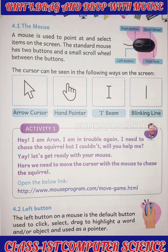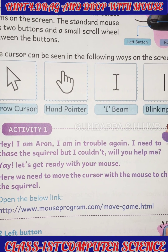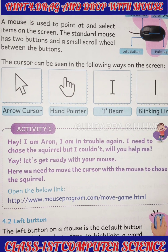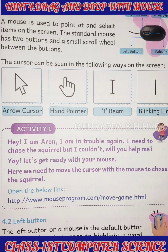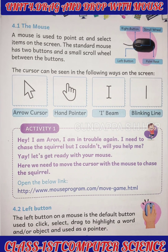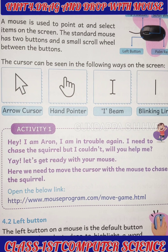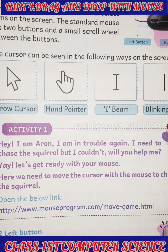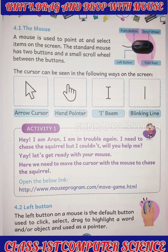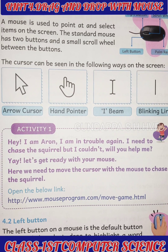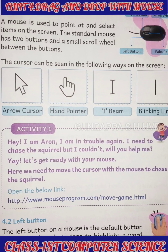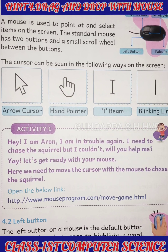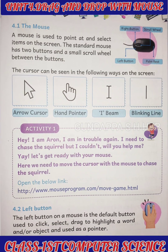A mouse is used to point at and select items on the screen. The standard mouse has two buttons and a small scroll wheel between the buttons. In the picture, you can see the mouse contains a left button and a right button — those are the two main buttons. Next is the scroll wheel button: if you want to move from one page to another, you use this scroll button. There is also a palm rest where you place your palm.